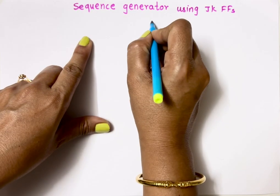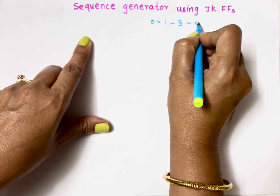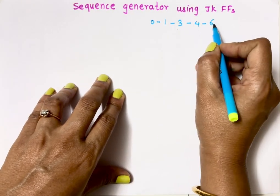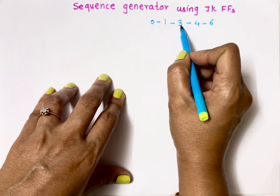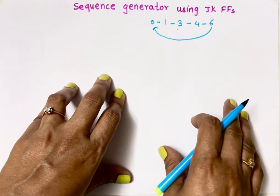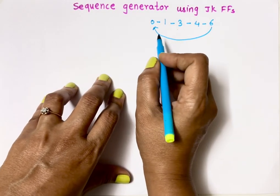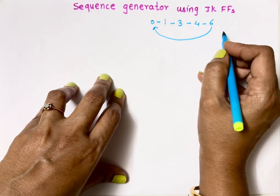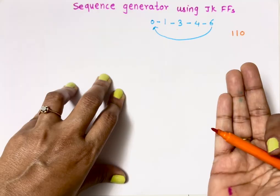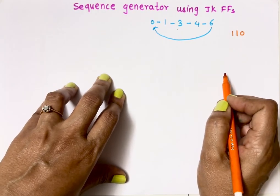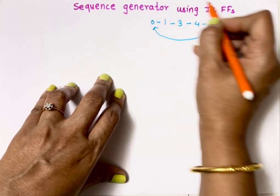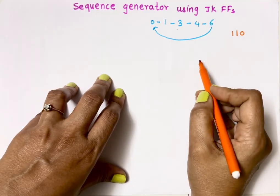Let's take one sequence: 0, 1, 3, 4, and 6. It means my sequence generator will move through these states only — after 0, next comes 1, then 3, then 4, then 6, and after 6 it goes back to 0. The largest number is 6, which in binary is 1-1-0, so we need 3 bits. Since a flip-flop is a 1-bit memory cell, we need at least 3 flip-flops, and these will be JK flip-flops.